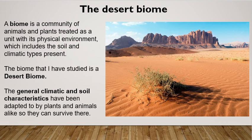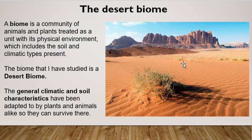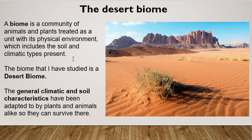So what is a biome? A biome is a community of animals and plants treated as a unit with its physical environment. The plants and animals that live in the desert biome are treated as a unit — they all have special characteristics that allow them to survive. We talk about the soil and climate types present. Because of the harsh physical environment, the soil and climate make it difficult for plants and animals to survive, so they must adapt to their harsh conditions. The biome we are going to study is the desert biome, where the general climatic and soil characteristics have been adapted to by plants and animals alike.